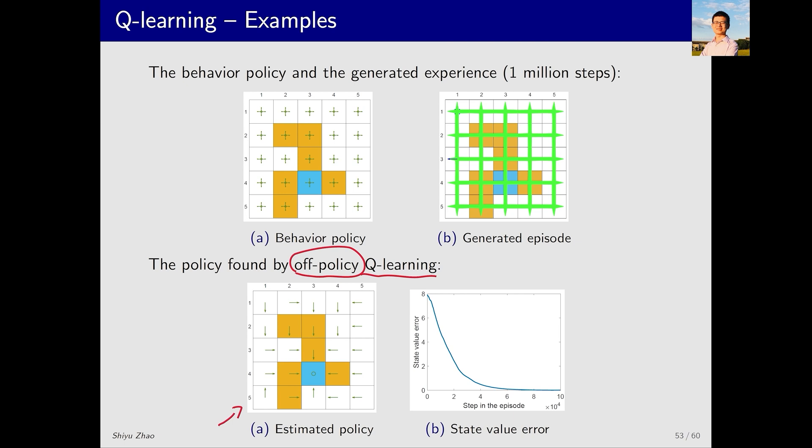There are some minor differences, like one direction being down and the other left. The optimality of this policy can also be demonstrated in the right figure. What does the vertical axis represent? It represents the value difference during the estimation process. More specifically, Q-Learning outputs a series of policies, each corresponding to a state value. We know its optimal state value, and then we can calculate the difference between them, which is what the vertical axis shows.